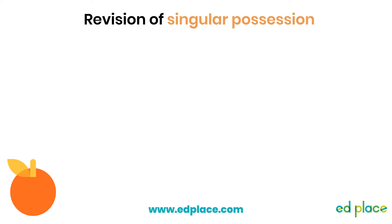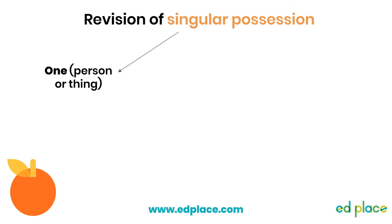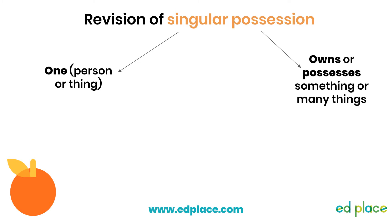You should have learnt about apostrophes for singular possession in Year 2. I'm going to go over it really quickly because it's so important that you are confident with this to help you understand apostrophes for plural possession. Singular means one — there is one person or one thing — and possession tells us that they own something or many things.